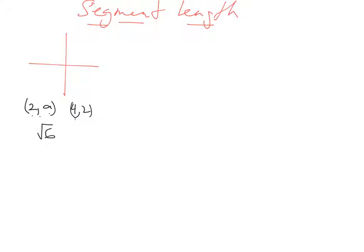Our points are (2, a) and (4, 2). To help you visualize this, 4 and 2 is a point we know exactly where that is. This 2 and a — we don't know where that is; that could be anywhere on this line where x equals 2. We've got our point (4, 2), we've got a length of the square root of 6, and this will give us two answers.